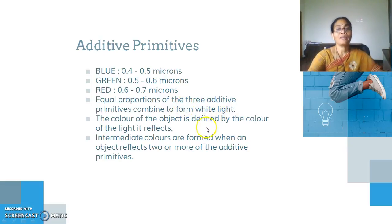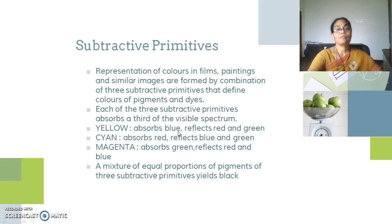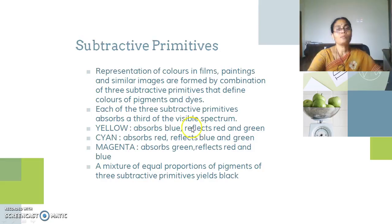The color of an object is defined by the color of the light it reflects. Intermediate colors are formed when an object reflects two or more of the additive primitives. Similarly, we have subtractive primitives. Representation of colors in films, paintings, and similar images are formed by combination of three subtractive primitives that define colors of the pigments and dyes. Each of the three subtractive primitives absorbs a third of the visible spectrum. They are yellow, cyan, and magenta. For example, yellow absorbs blue and reflects red and green. Cyan absorbs red and reflects blue and green. Magenta absorbs green and reflects red and blue.